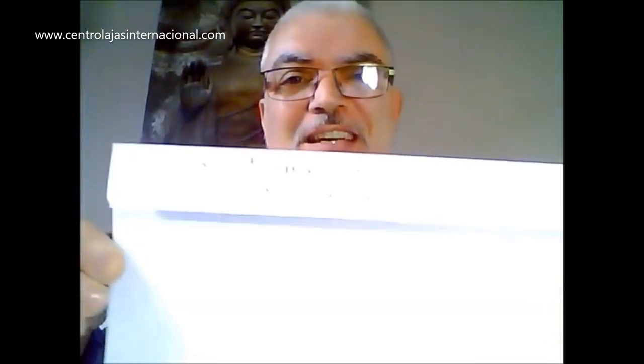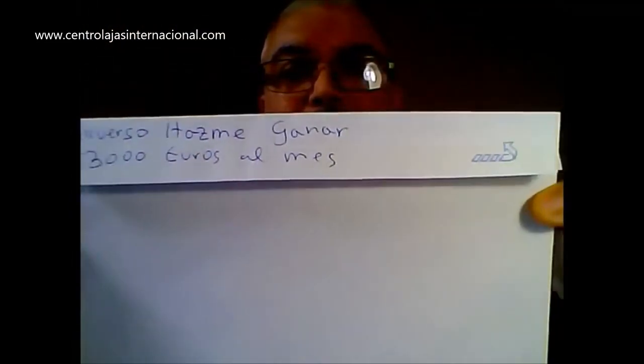Cuidado: lo que necesitas, no dinero para derrochar. ¿Cuánto dinero haría que tú estuvieras bien, sin deudas y toda tu familia? Entonces, aquí atrás — esto es un ejemplo que he hecho, este no es mi sobre — he puesto: 'Universo, hazme ganar 3.000 euros al mes.' Euros, pesos, dólares, pesos argentinos... En la parte de atrás ponemos la cantidad que queremos ganar. Tienes que escribir 'Universo, hazme ganar' y escribes ahí la cantidad: 3.000 euros, 1.000 euros, 5.000 euros, pesos, o lo que sea. Le damos la vuelta.